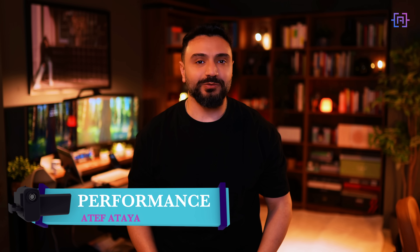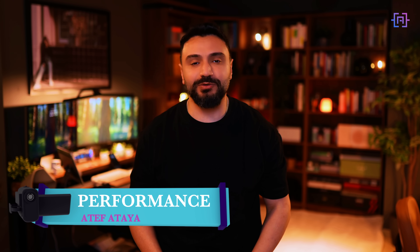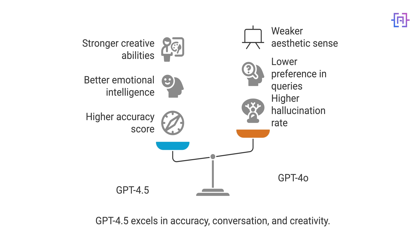What sets GPT-4.5 apart from models like GPT-4.0? Let's break down the key improvements. GPT-4.5 stands out in three main areas. First, factual accuracy: internal testing shows GPT-4.5 is much better at providing accurate information. It scores 62.5% on simple QA benchmarks, compared to just 38.2% for GPT-4.0. It also has a lower hallucination rate, 37.1% versus 61.8% for GPT-4.0.